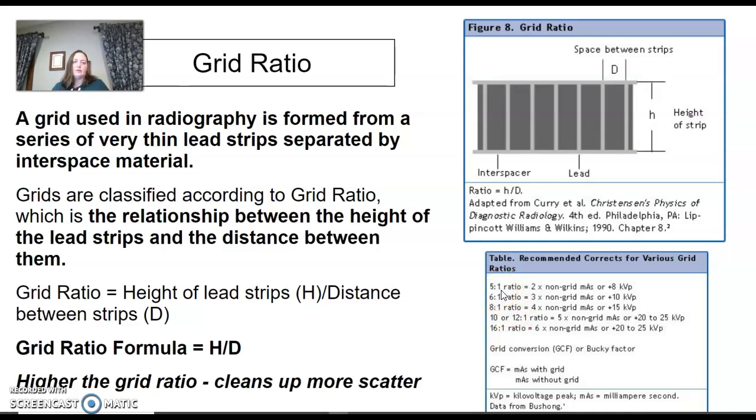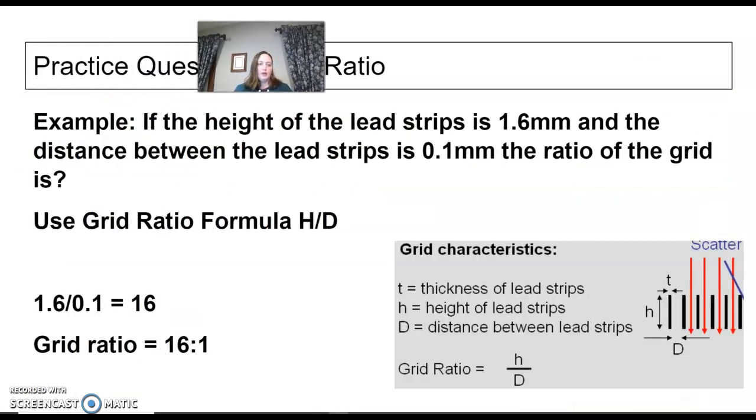There's a series of grid ratios and these will change as we're moving along. What your facility has for a grid ratio might be different. I've never actually seen a 16 to 1, but maybe it's out there. Most often now we're seeing like 6 to 1s on a lot of our digital portables. We'll see 8 to 1s are very common. A lot of times the table grids are a 10 to 1 or a 12 to 1. But you wouldn't know that unless you pull the grid out of there just for fun.